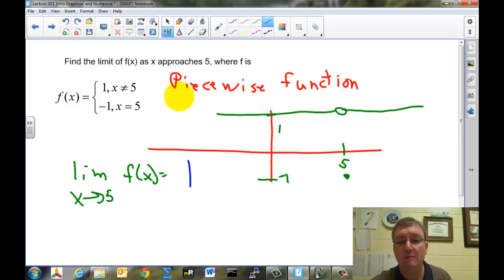Numerically, what happens if I put in 5.001? What do I get out? The number 1. If I put in 5.0000001, I get out the number 1. What if I put a number smaller than 5 in? 4.99999999, I get the number 1.